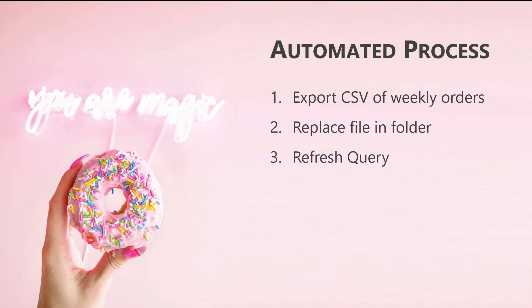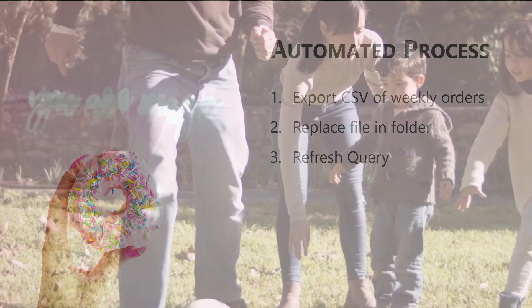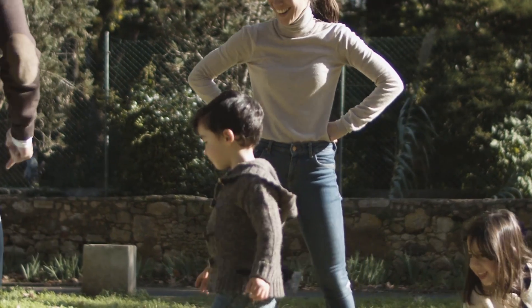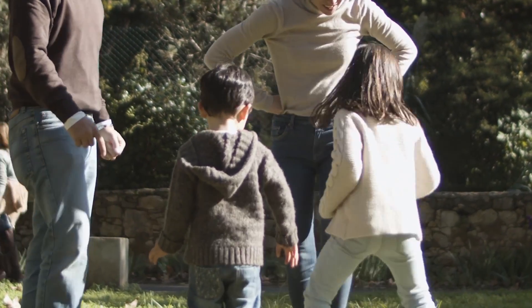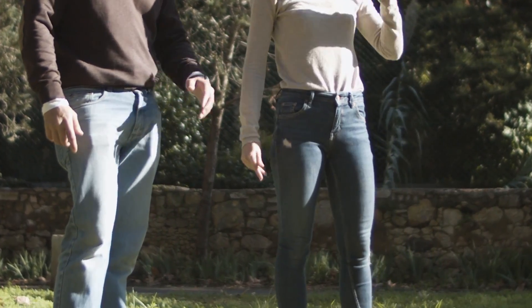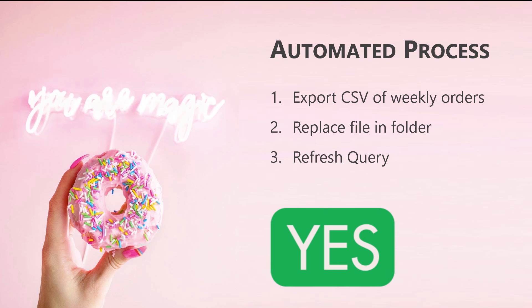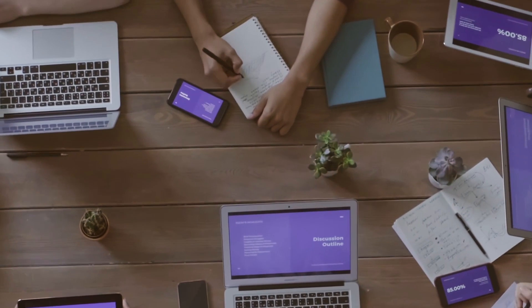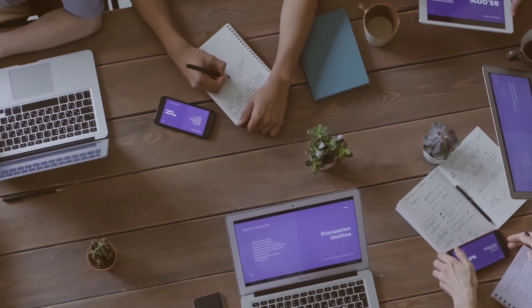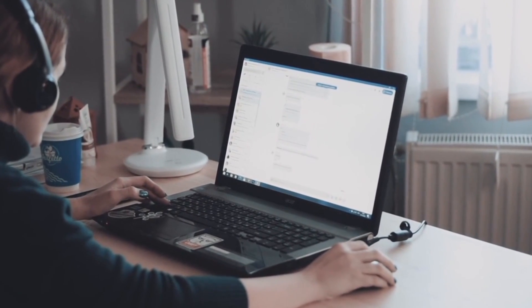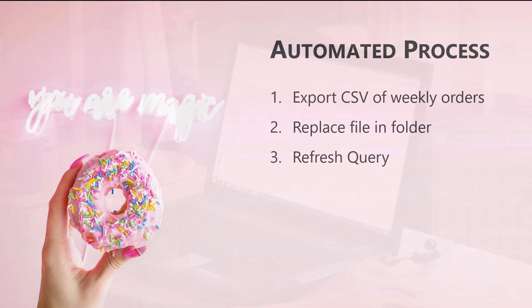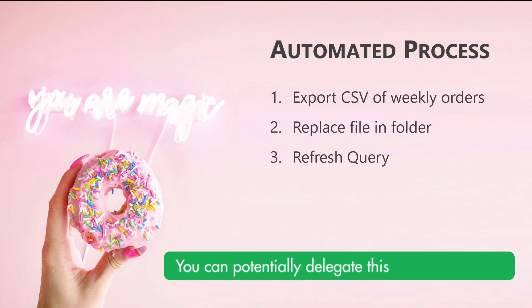What that means is you might not have to be the person doing this process anymore. Could the assembly line manager run this process when they get in at 6:30 Monday morning? Typically the answer is yes. You can be the one who created this process and who still edits it if things change — but you don't have to run it every week, every day, or every month. You can potentially delegate this to someone else.